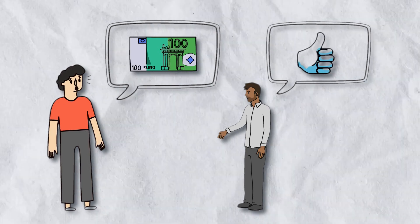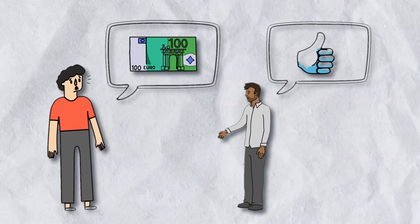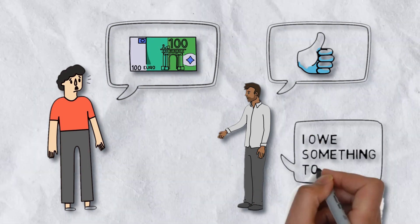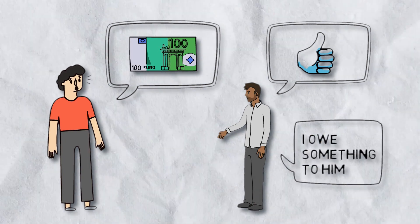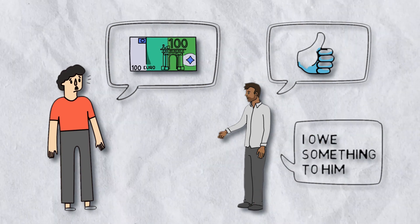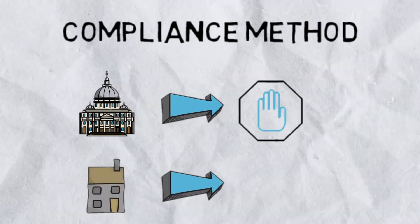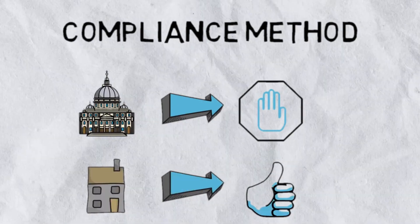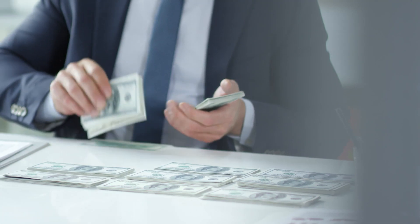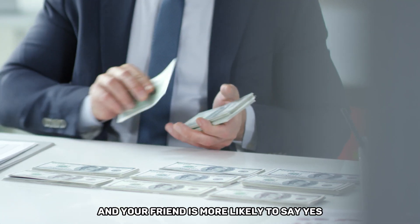So, you follow up with a smaller request like, okay, no problem. How about $100 for a concert ticket instead? See how it works. By asking for something big first, you make the smaller request seem more reasonable and your friend is more likely to say yes.